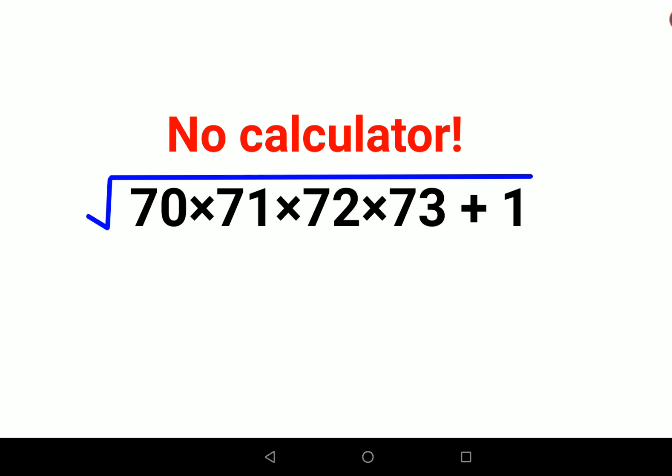First, let's forget the root for now. We'll take X as 70. So this is X, this will be X plus 1, this will be X plus 2, and this will be X plus 3, and plus 1.